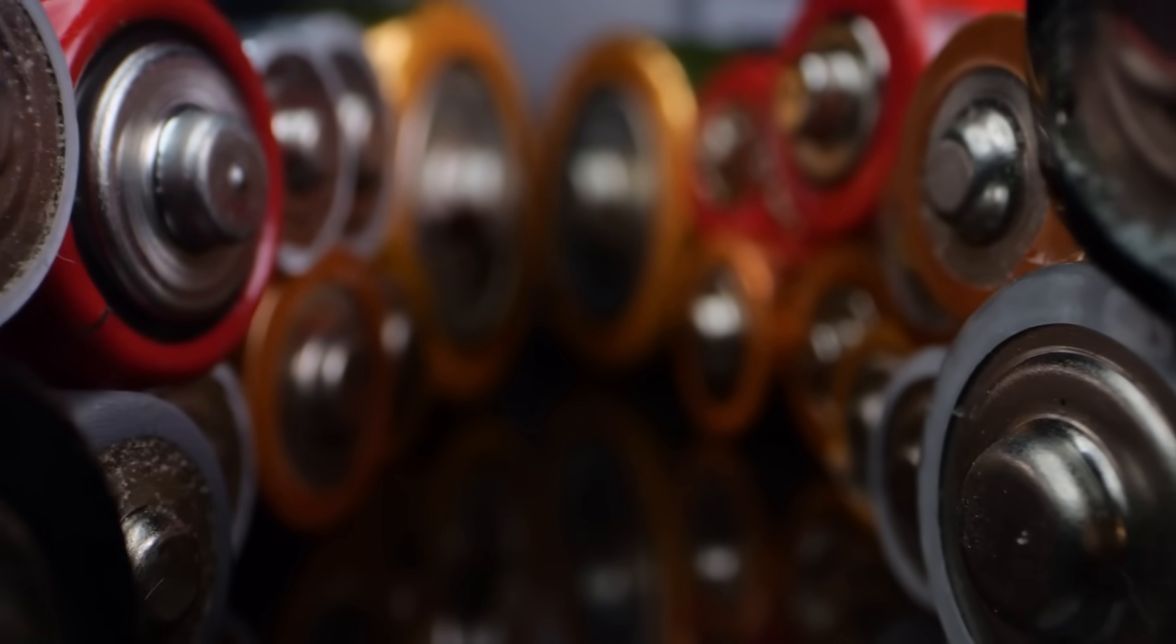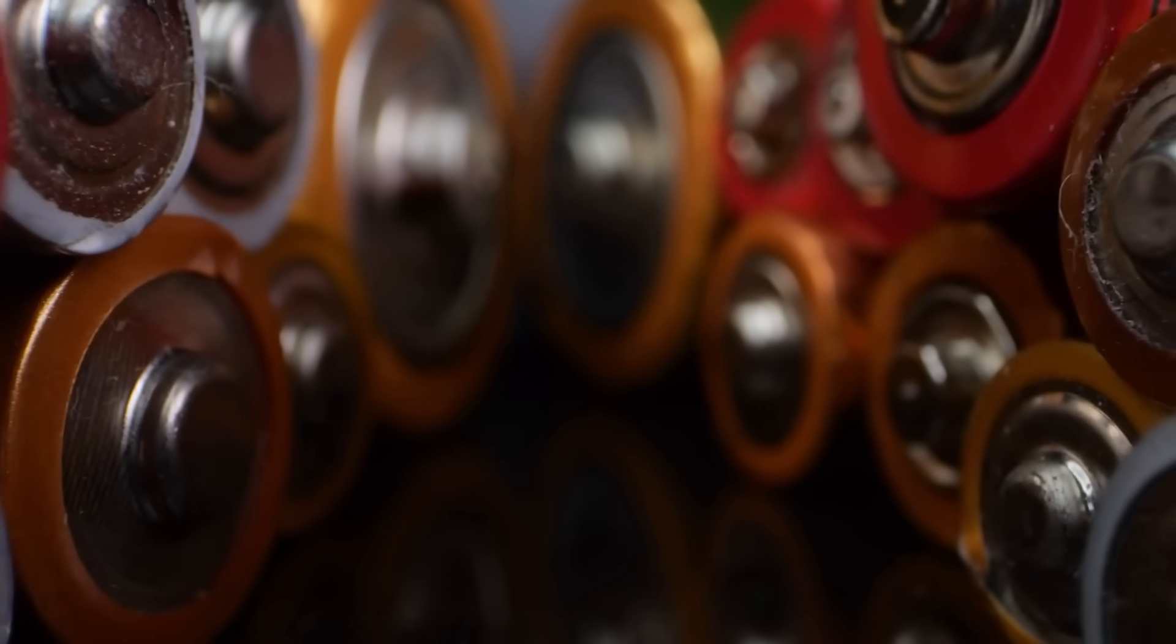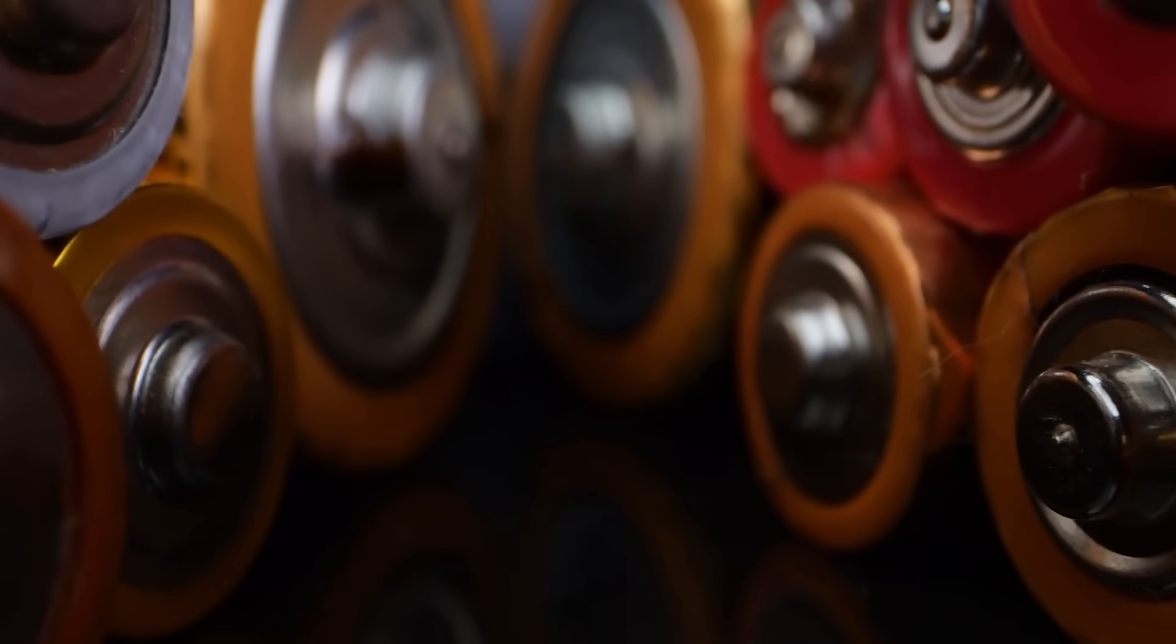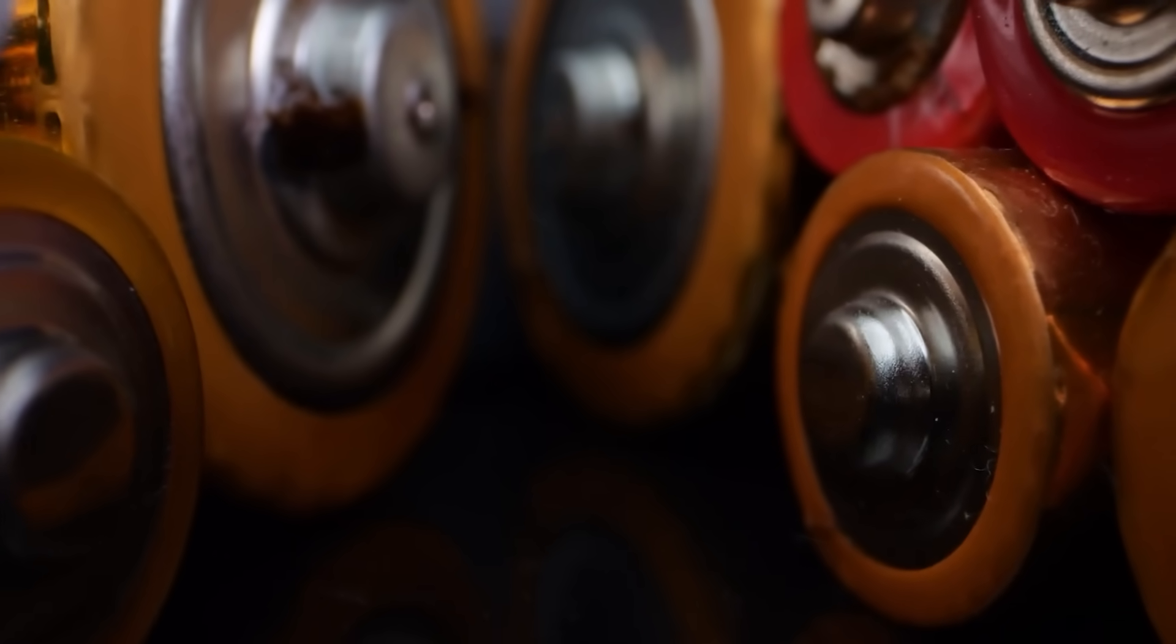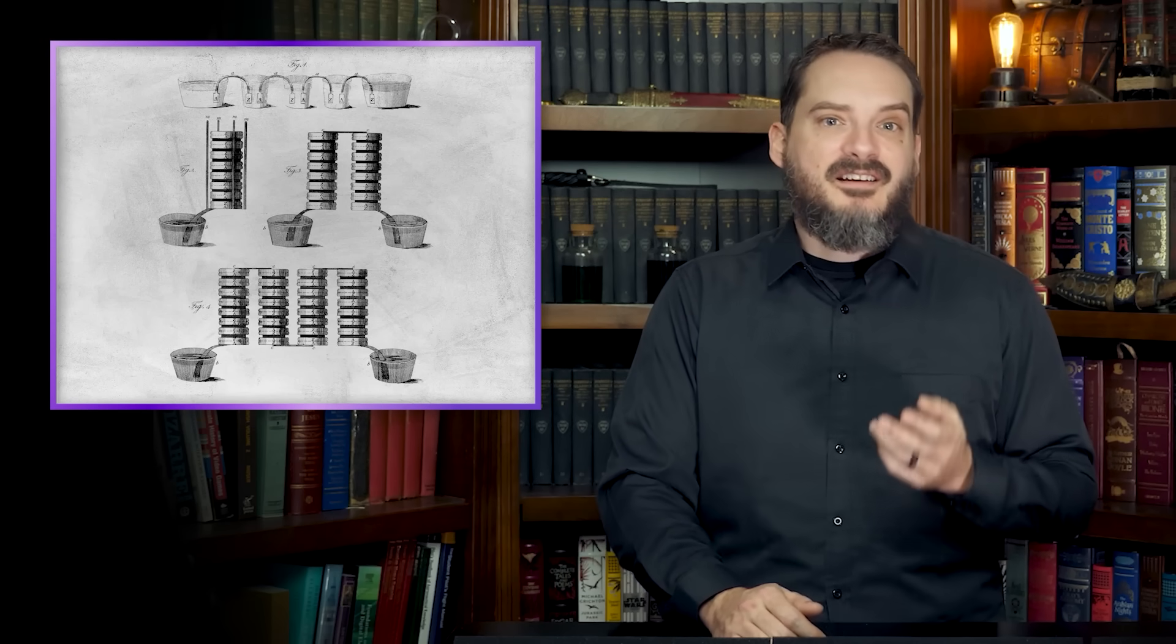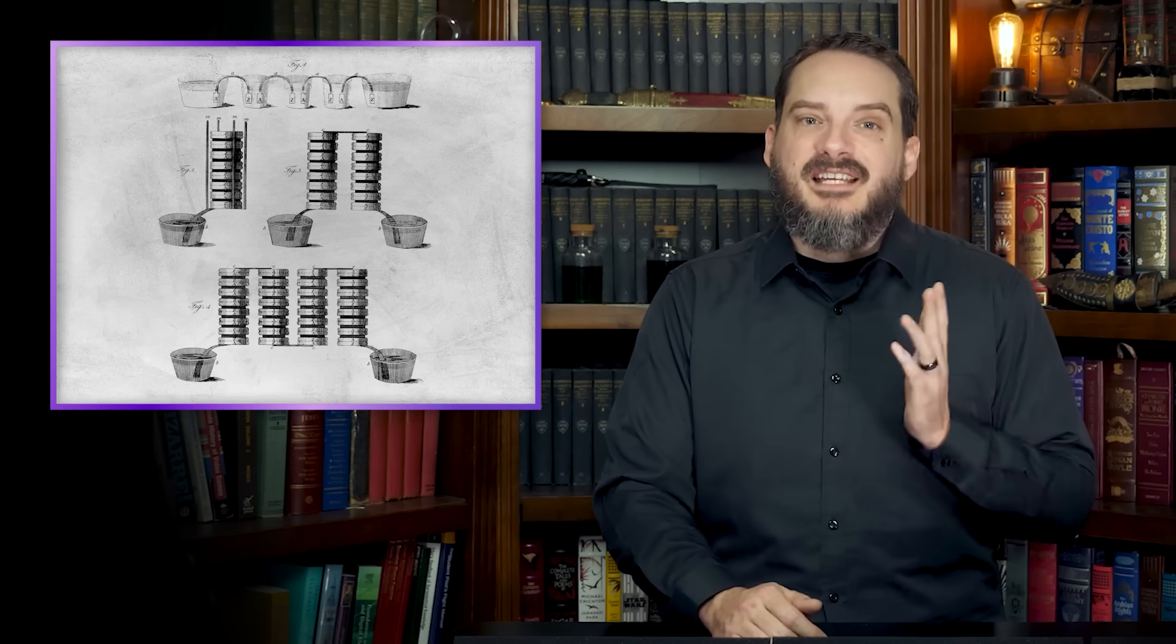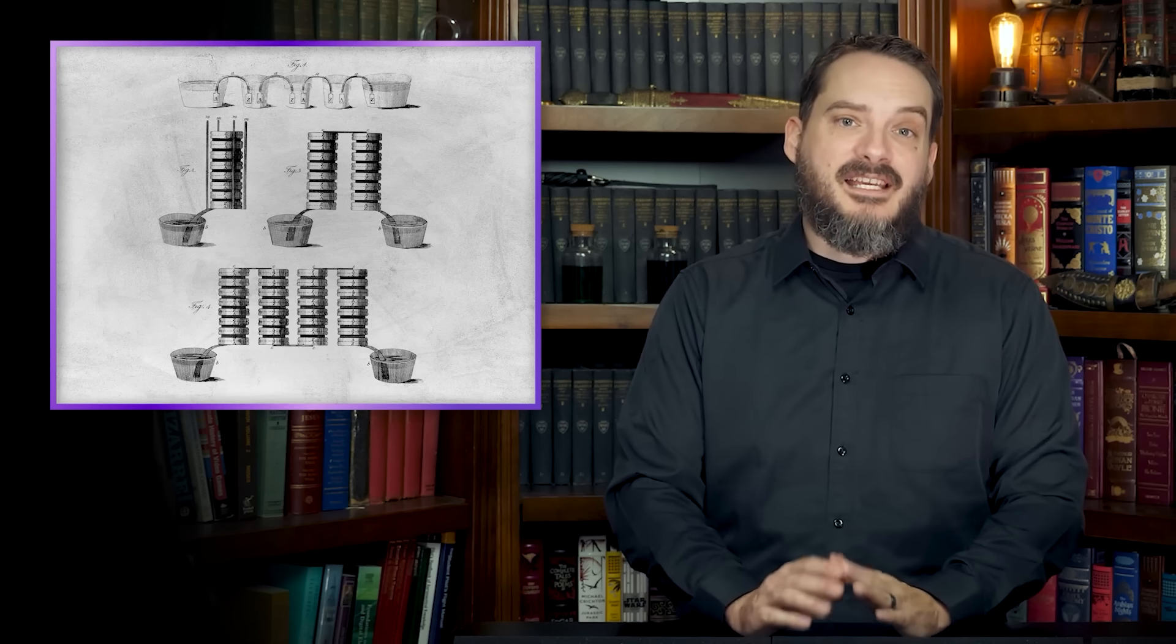Pioneering though it was, Volta's first pile suffered from a number of drawbacks. It had a very low battery life of just a few hours, suffered from frequent short circuits caused by electrolyte leaking from cardboard discs, and current running through the electrolyte electrolyzed the water and caused a film of hydrogen bubbles to form over the copper discs, causing internal resistance that gradually increased.